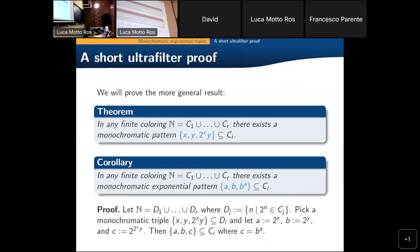Let me explain a particular case of this result that can be proved shortly. We will prove a result which is actually more general than an exponential triple, because if I have a monochromatic configuration of this form and I take 2 to the power of these elements, I obtain an exponential configuration. So in other words, if I have a finite coloring and I want to find an exponential configuration, I change the coloring by introducing these colors — by the previous result I have a monochromatic triple of this form — which means when I take 2^x, 2^y, and 2^(this number), they belong to the same color class, and A, B, C form an exponential configuration.